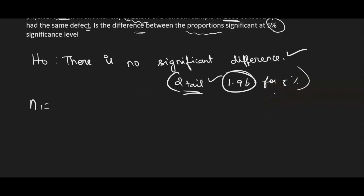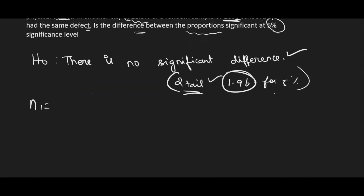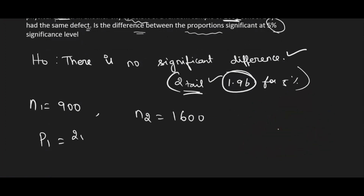Here n1 = 900 (city A) and n2 = 1600 (city B). The proportions are given as percentages: p1 = 20% = 20/100 = 0.20, and p2 = 18.5% = 18.5/100 = 0.185. We will keep them as 20/100 and 18.5/100 to make the calculation of p easier.